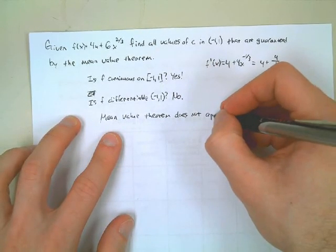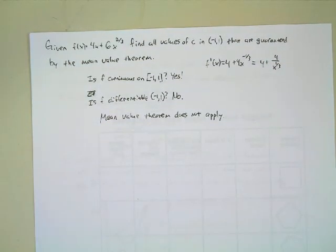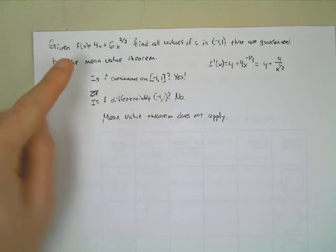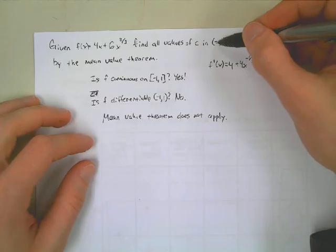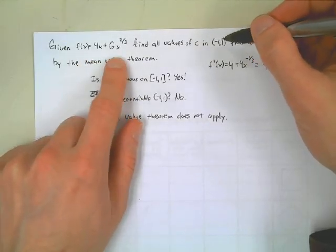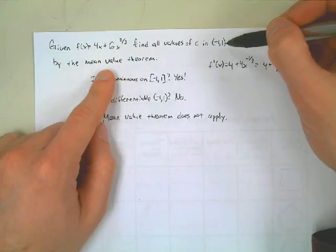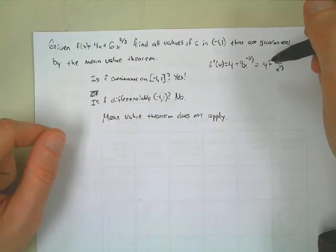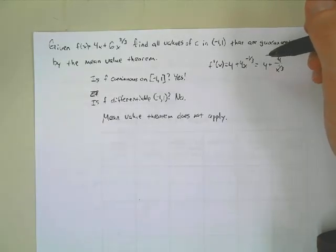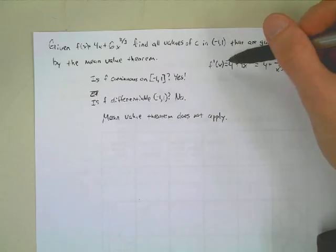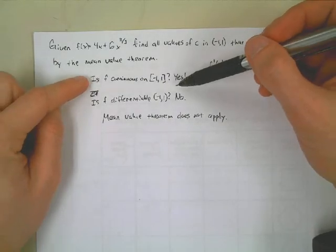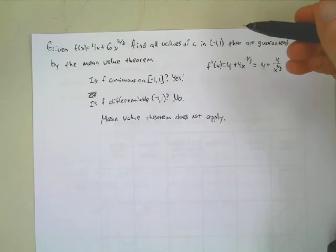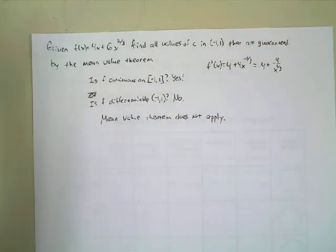What does it mean that the mean value theorem doesn't apply? We could still find the average rate of change between these two points — you could do F(1) minus F(-1) over 1 minus (-1), no problem. But we're not guaranteed that the derivative would equal that value. Could the derivative still equal that value? It could, but we're not guaranteed it will. If the function is continuous and differentiable, then the average rate of change must equal the derivative at some point — but here, we don't know.